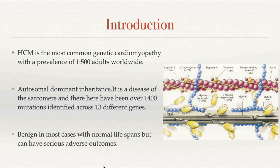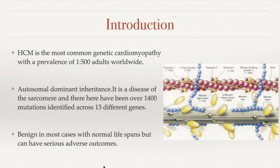Hypertrophic cardiomyopathy is the most common cardiomyopathy with a prevalence of about 1 in 500, and some literature says 1 in every 200 adults worldwide, across all ethnicities and geographic areas. The genes responsible are inherited as autosomal dominant. It's a disease that involves the sarcomeres of the myocardium. Over 1,400 mutations have been identified across 13 different genes, and some literature says more than 2,000 mutations. Despite this, it is a benign disease in most adults. A lot of people don't even know they have HCM and have normal lifespans, but the disease can have serious adverse events. It's important to diagnose it and screen first-degree relatives once we make a diagnosis.